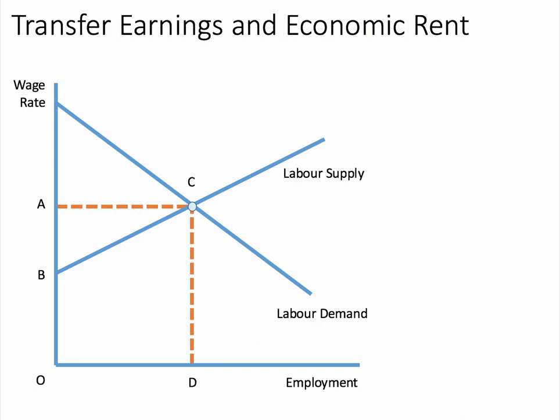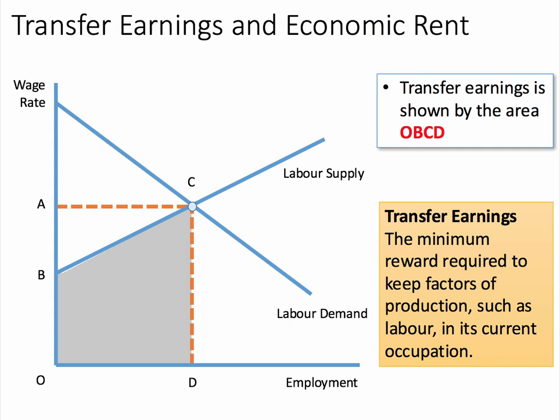Here's a labour market diagram showing labour supply and labour demand. The equilibrium wage for this particular occupation is A, and there are D number of people employed. Transfer earnings are defined as the minimum reward required to keep a factor of production, such as labour, in its current occupation. And transfer earnings, in the labour market diagram, are shown by the area underneath the labour supply curve — that's the shaded area O, B, C, D.